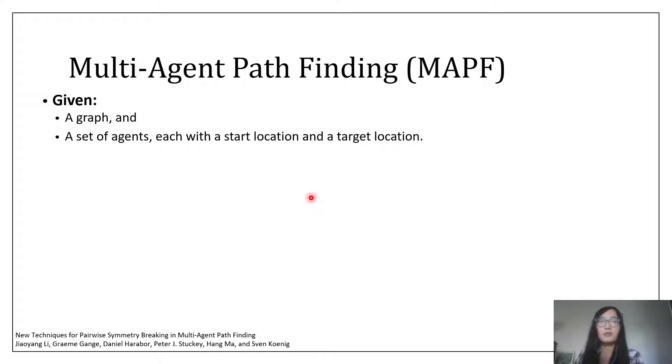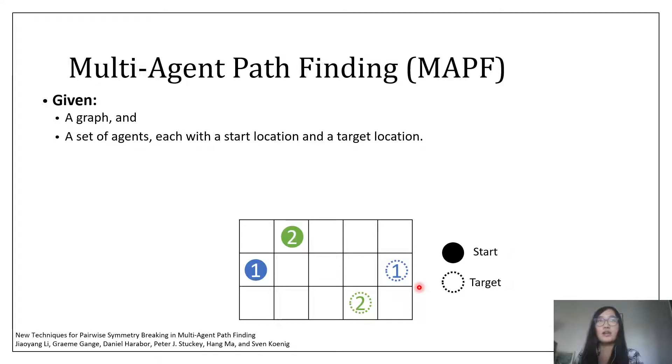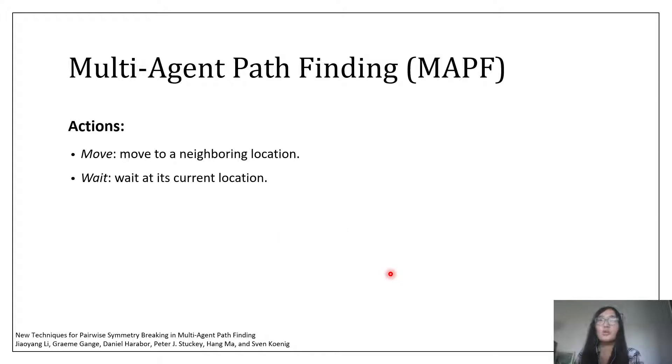To formally define this problem, we are given a graph. Like here, we have a four-neighbor grid. We are given a set of agents, each with a start location and a target location. At every time step, an agent can either move to a neighboring location or wait at its current location.